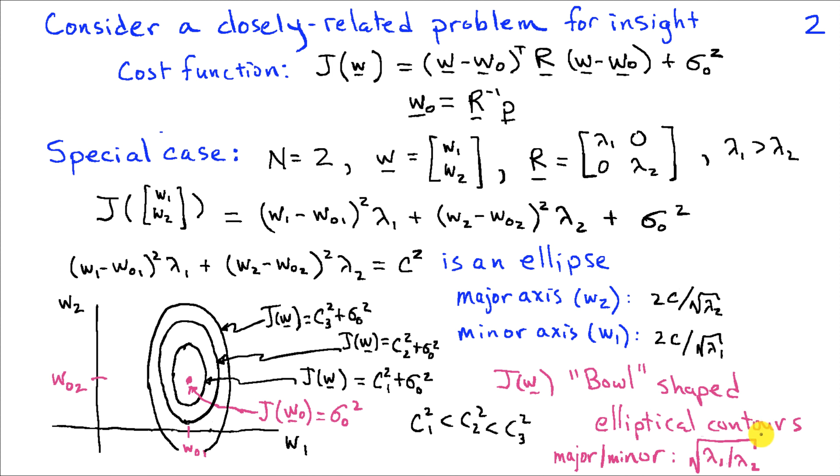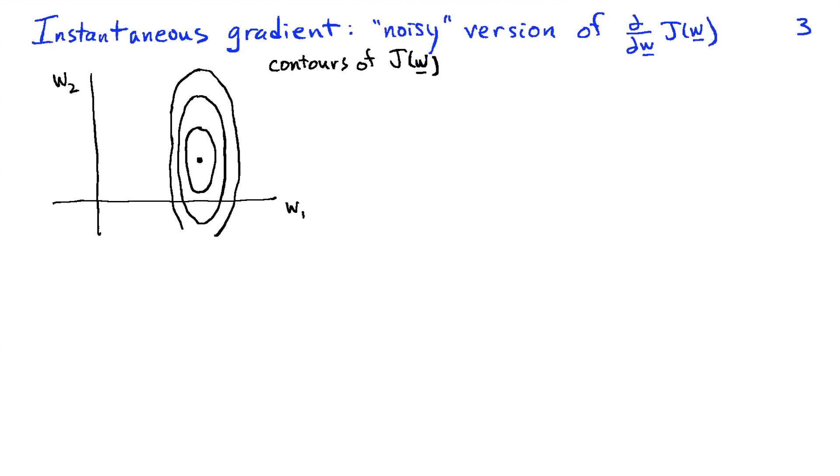then the bowl becomes very narrow in the W1 direction and very long in the W2 direction, much like a very narrow valley.